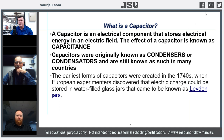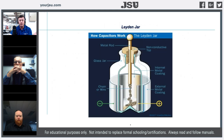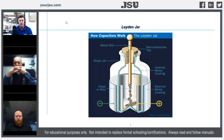The earliest forms of capacitors were created in the 1740s when European experimenters discovered that electrical charge could be stored in water-filled jars that came to be known as Leyden jars. They were able to collect static electricity and needed a means of storing it. Using very simple components — a glass jar, a metal rod (typically brass), and a cork insulator — they formed a metal coating on the outside of the glass, an internal metal coating, and filled it with water, sometimes salt water, experimenting with different salinities of conductive fluids.